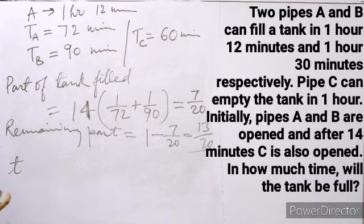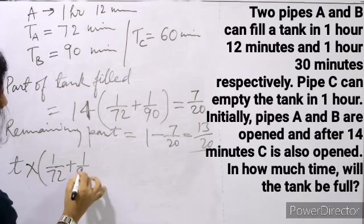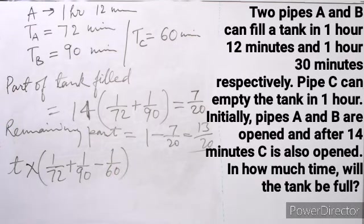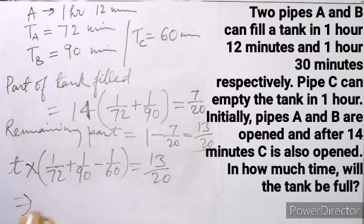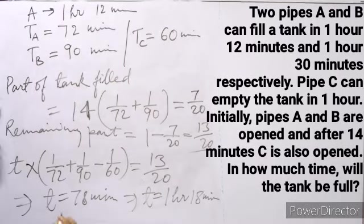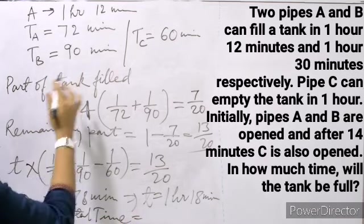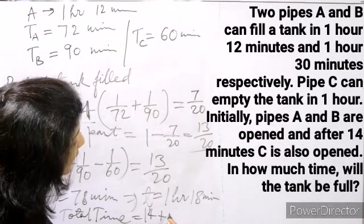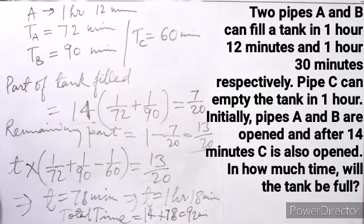With all three pipes open, the time T to fill the remaining 13/20 of the tank gives T = 78 minutes, which is 1 hour 18 minutes. So the total time taken to fill the tank is the first 14 minutes plus 78 minutes, which equals 92 minutes, or 1 hour and 32 minutes.